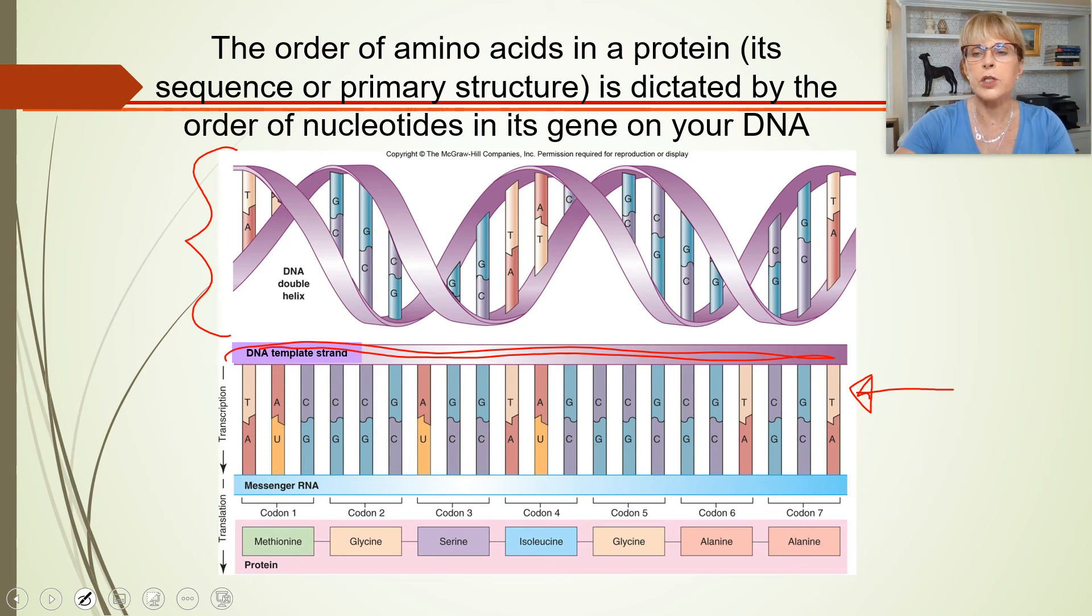So when transcription happens, when transcription happens, then RNA polymerase is going to build messenger RNA. And the rules are almost the same, right? Wherever there's a G on the DNA, RNA polymerase will put a C in the little complementary strand it has. If there's a T in the DNA, it will put an A. But the only place that's different is that wherever there's an A, RNA polymerase can't put a T because RNA doesn't have a thymine. So RNA polymerase, wherever there's an A on the DNA side, it will put a U in the messenger RNA.